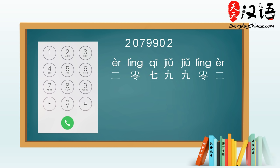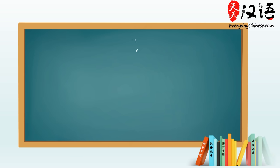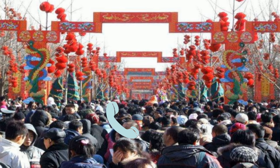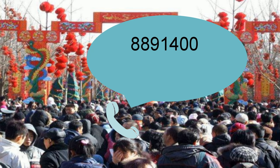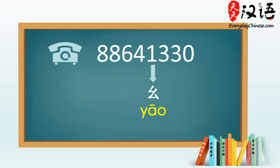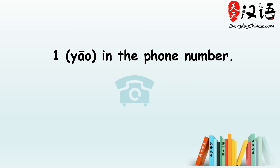In a real-life context, you may hear some Chinese people pronounce the number 1 as 幺 instead of 一, especially in a phone number. Imagine someone is telling you a phone number in a very noisy environment — you might get confused whether they said 一 (one) or 七 (seven). So Chinese people prefer to read 1 as 幺 in phone numbers to distinguish it from 七 (seven). Let's take a look at how to use 幺 to refer to the number 1 in a phone number.